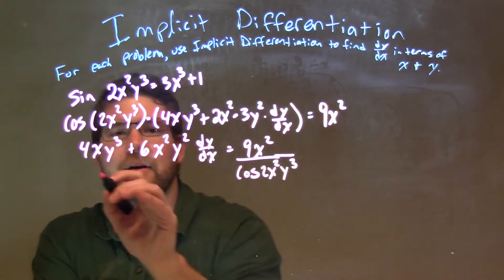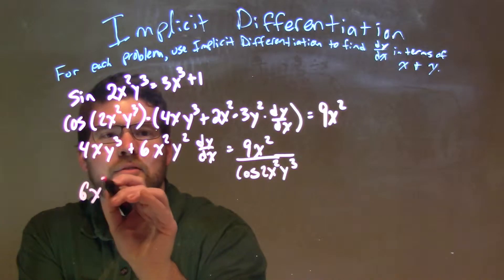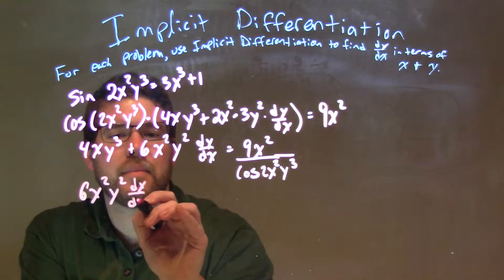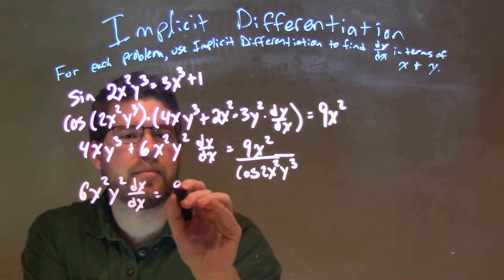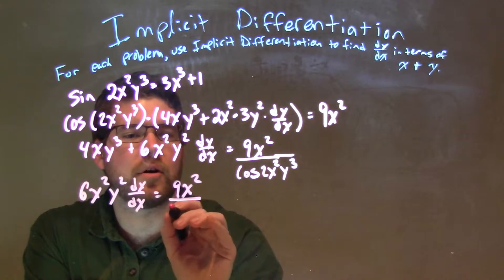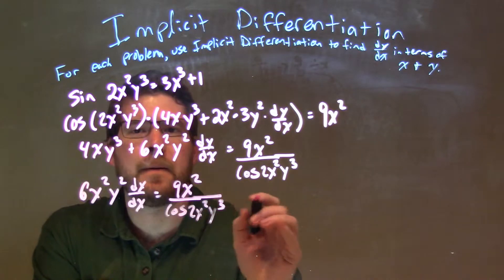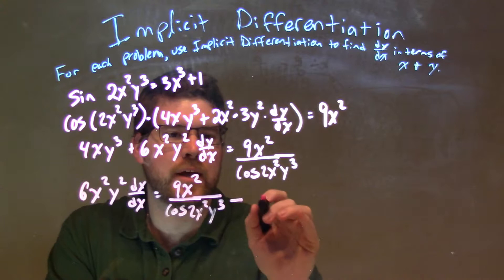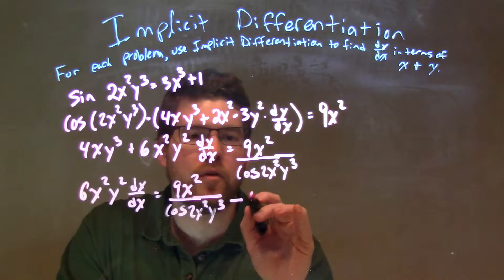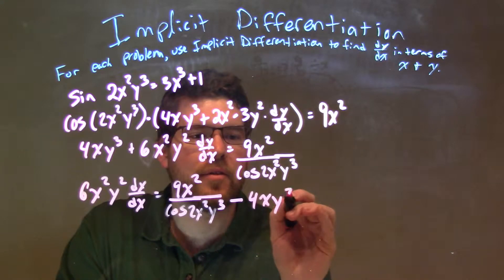So I have 6x squared y squared dy/dx equals, bring this down, 9x squared over cosine of 2x squared y cubed minus, we'll subtract from both sides, 4xy cubed.